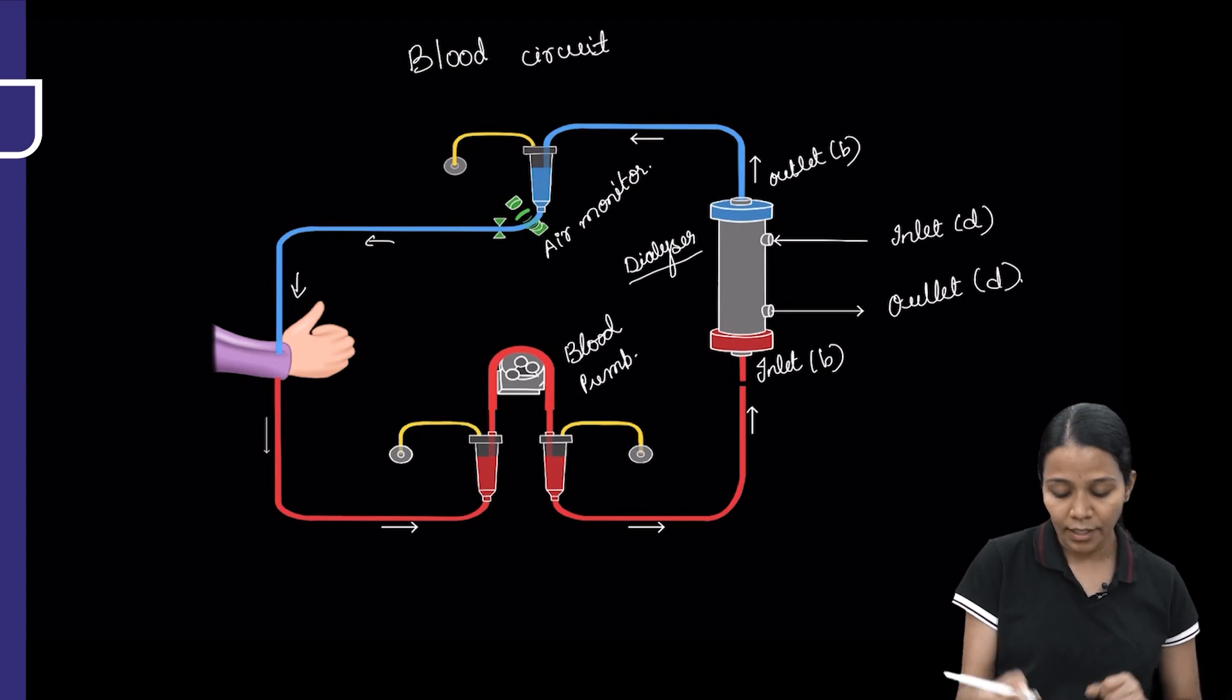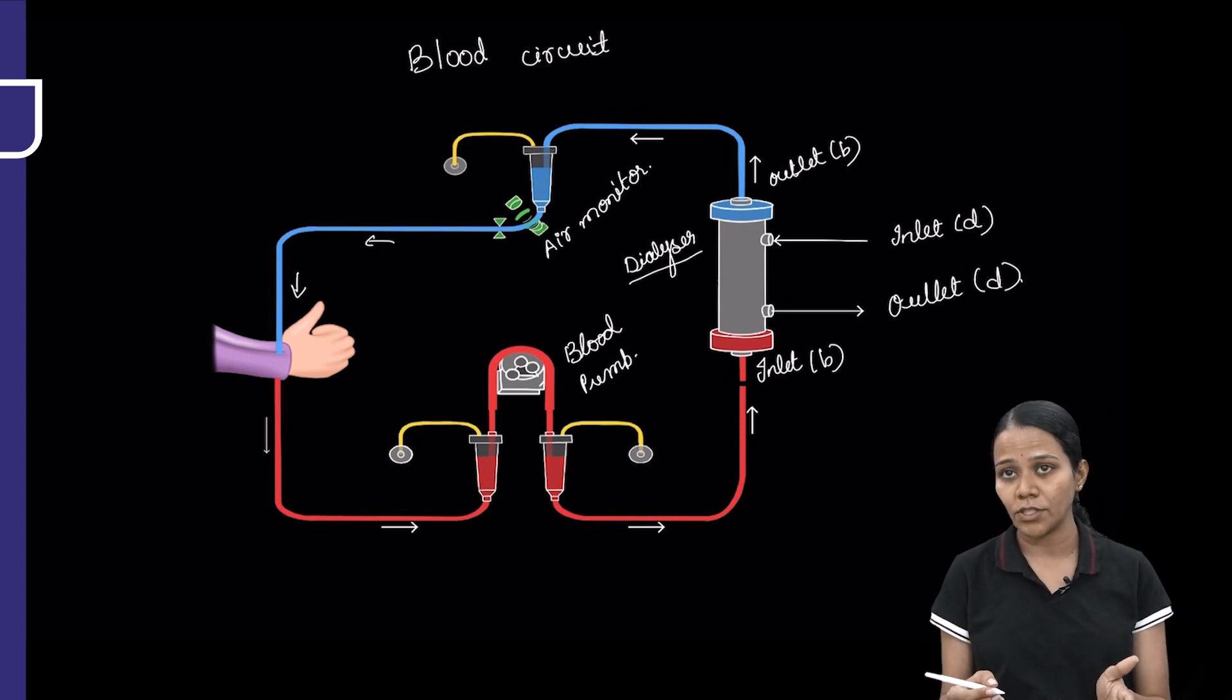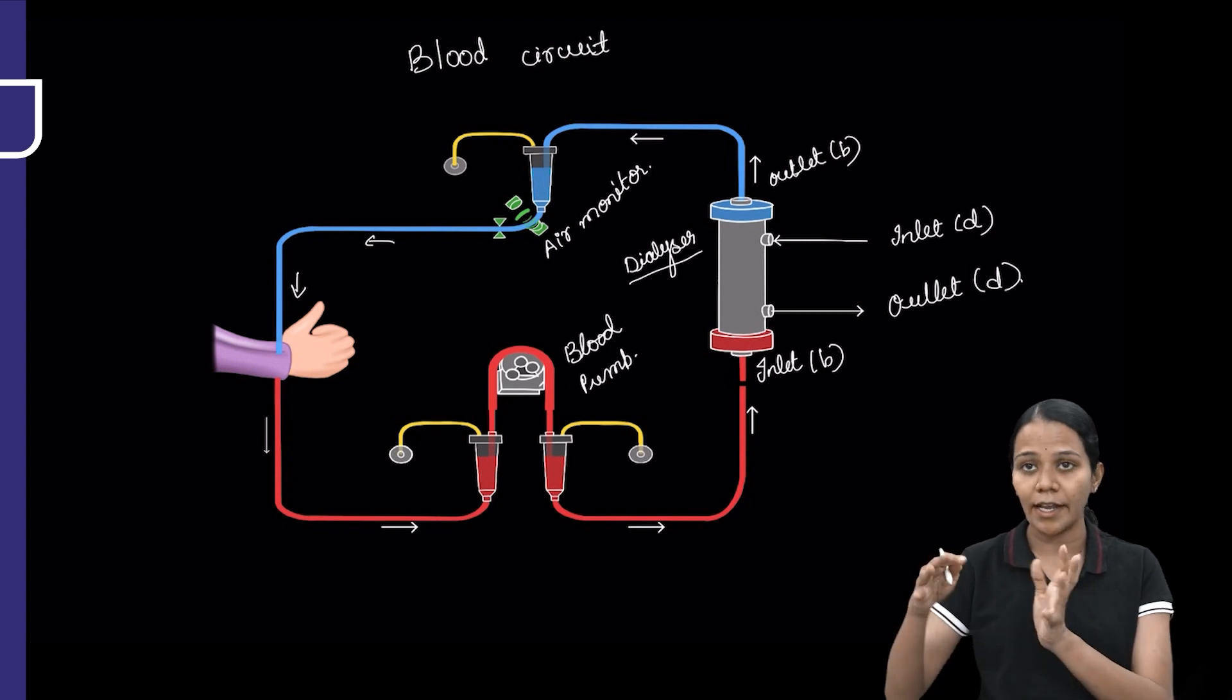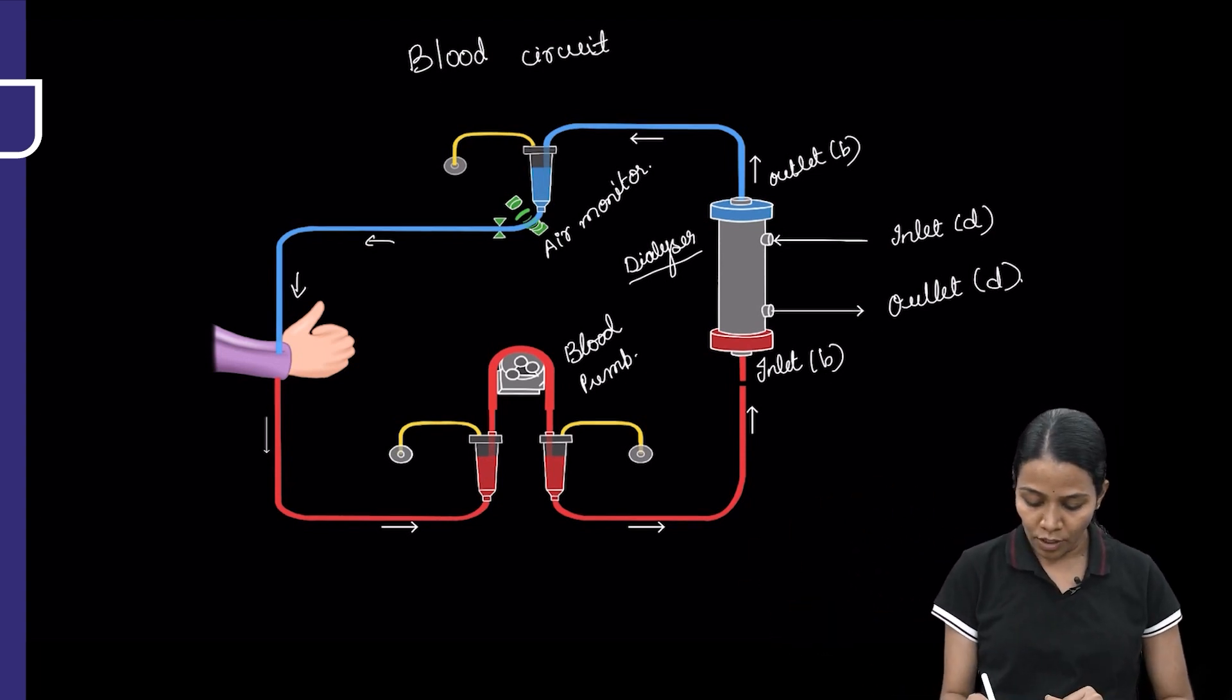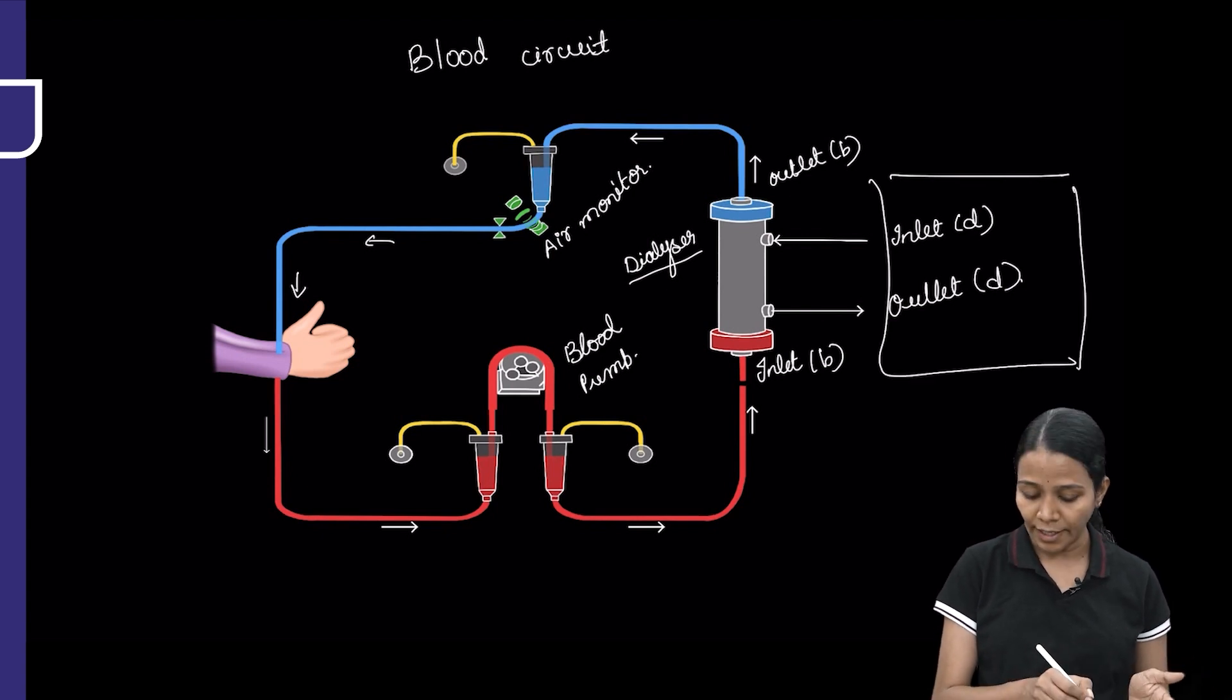We know that the extracorporeal circuit has a blood circuit, a dialyser, and a dialysate circuit. There is a circuit through which the dialysate enters into the dialyser. That circuit I will be dealing with next.